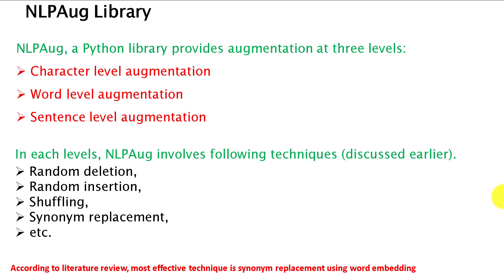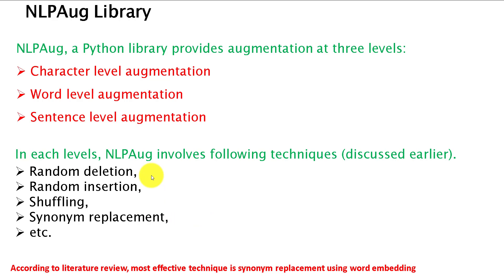The last data augmentation technique is the NLP aug library. NLP aug is a Python library that can be applied at three different levels: character level, word level, and sentence level. In this library, we can apply techniques discussed earlier — such as random deletion, random insertion, shuffling, and synonym replacement — all of which fall under easy data augmentation. According to literature, synonym replacement using word embedding is the most popular technique for data augmentation.